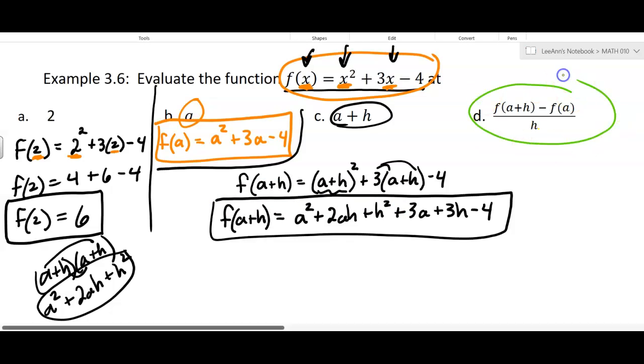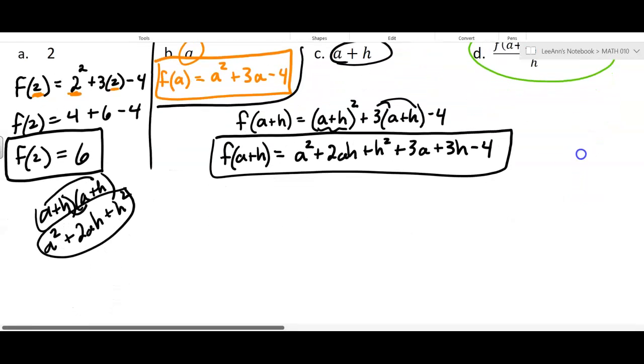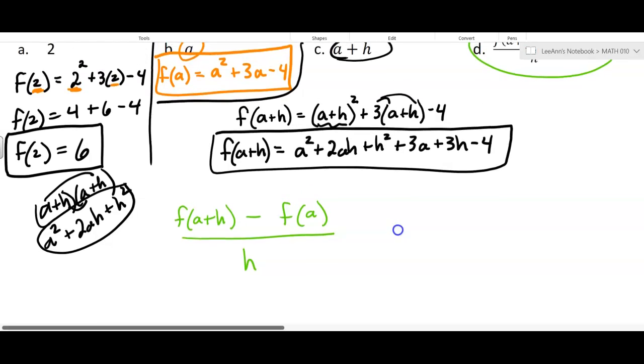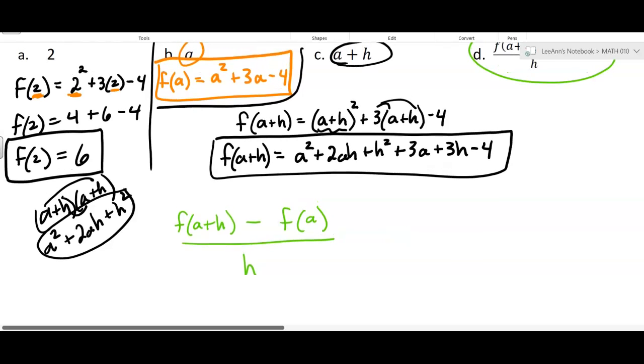Now, we want to do this one. It gets a special name. We're going to say f of A plus H minus f of A all over H. This is actually called the difference quotient. And it's very special. So how do we do this? Well, we already did f of A plus H. That was right here. So I just have to put that in.